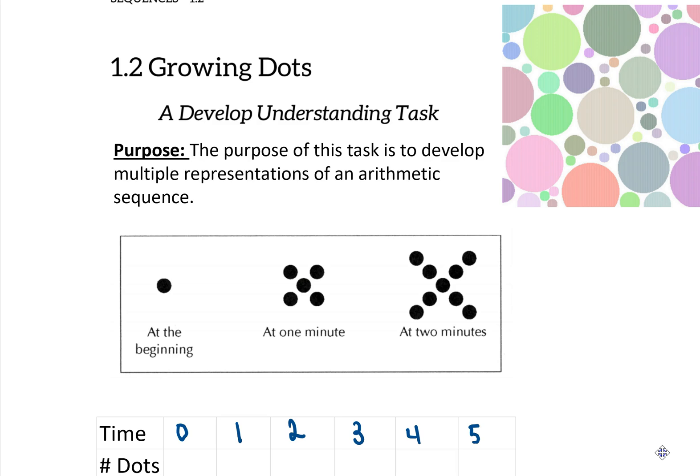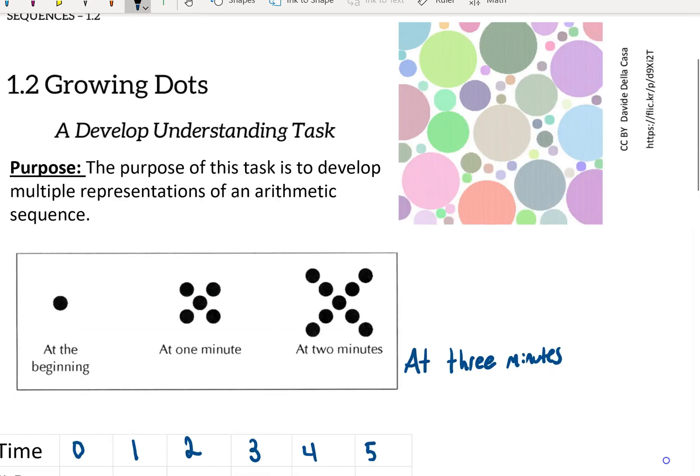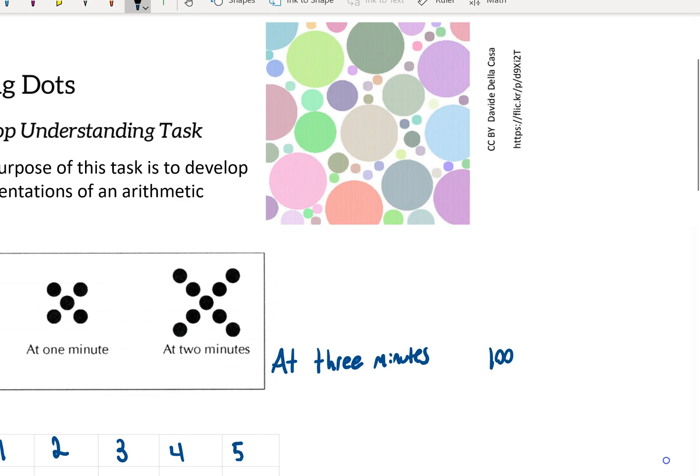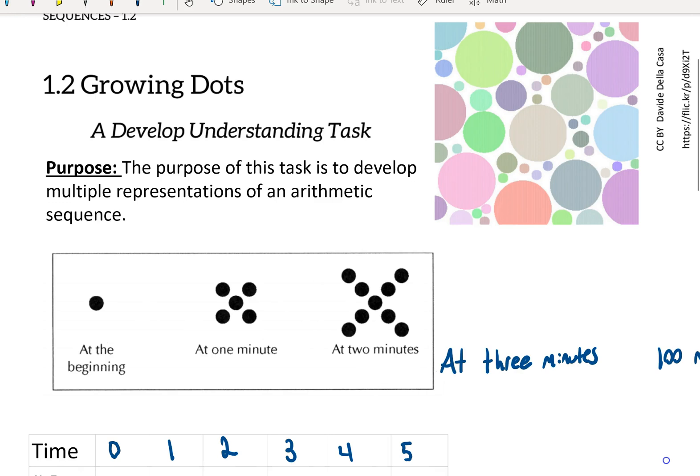We can see, if you read the scenario in your module, you're given a series of dots. We're given at the beginning, at one minute, at two minutes. We are asked to figure out how many dots there will be at three minutes, then at 100 minutes, and then also at T minutes. Three minutes is pretty easy. Some students may just dive straight in and say, I can take the two minutes picture and I see what's going on here. Every time it's growing by one dot on each of the wings of the X.